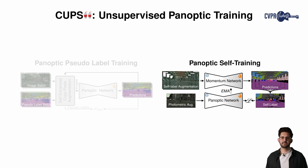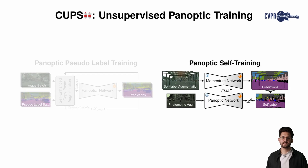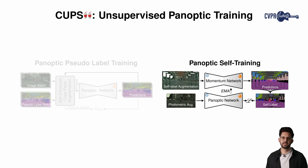To enhance segmentation accuracy and further generalize to static objects, we present a panoptic self-training. Using a student-teacher framework, we perform multi-scale augmentations and construct self-labels from the model's predictions. Applying strong photometric augmentations on the input image, we train the panoptic network using the self-labels and update the momentum network using an exponential moving average.